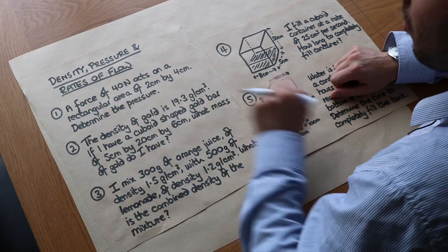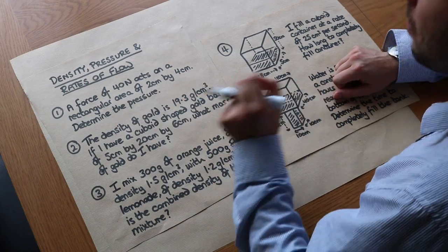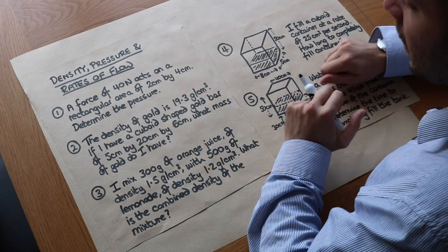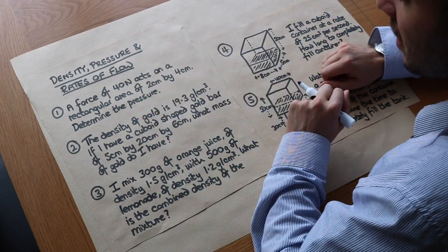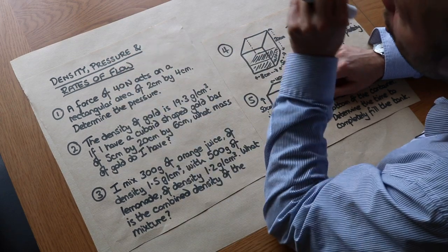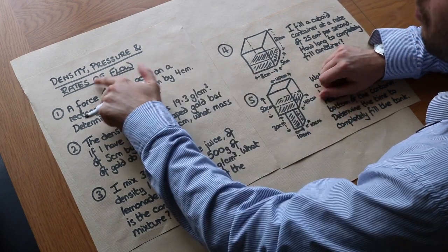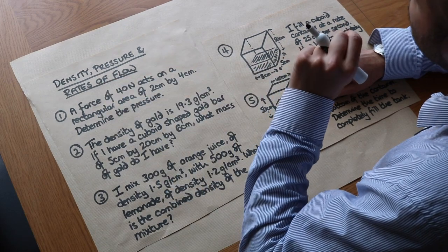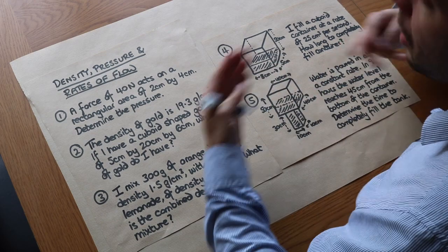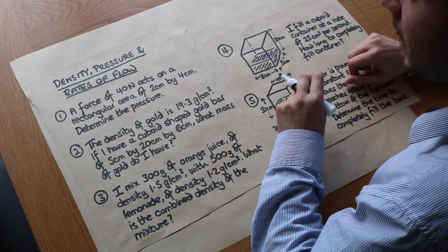Here we're going to look at other compound measures. Density is mass per unit volume — how much material is packed into a particular space, something you might have seen in physics. Pressure is the amount of force per unit area. Rates of flow describes the amount of liquid flowing per unit time, for example per second or per hour.